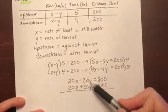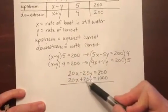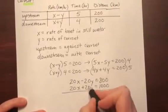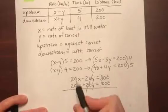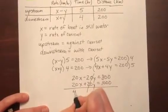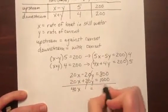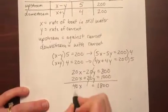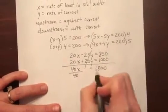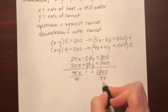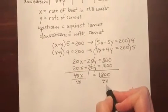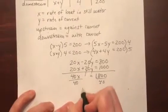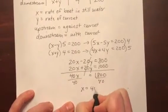Now you'll notice that my y terms, I have a negative 20 and a positive 20. So if I add these two equations together, the y terms will cancel out. And I'll have 20x plus 20x is 40x. And 800 plus 1000 is 1800. And now I can divide everything by 40. And so 1800 divided by 40 is equal to 45. So x is 45.